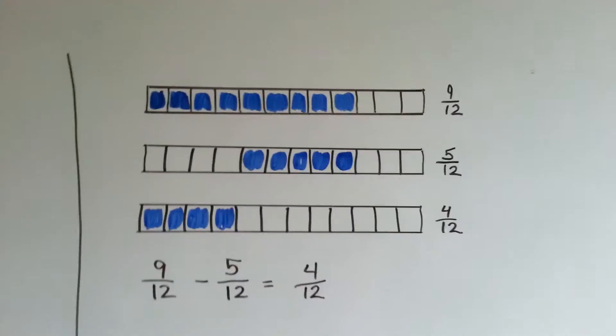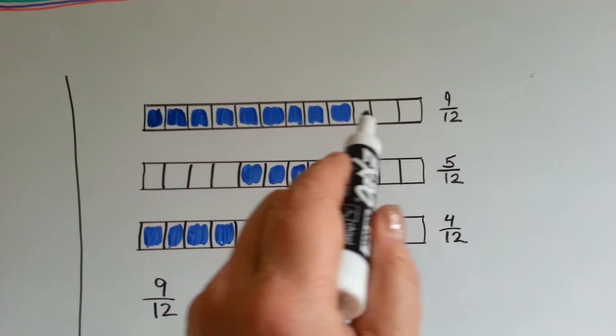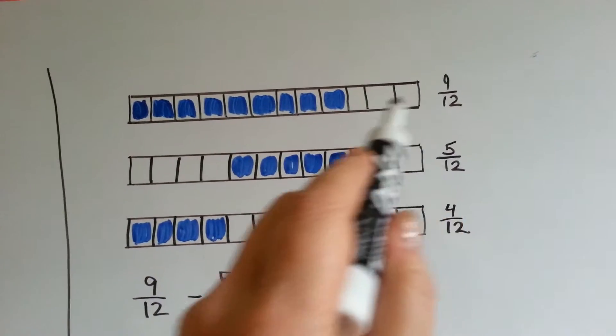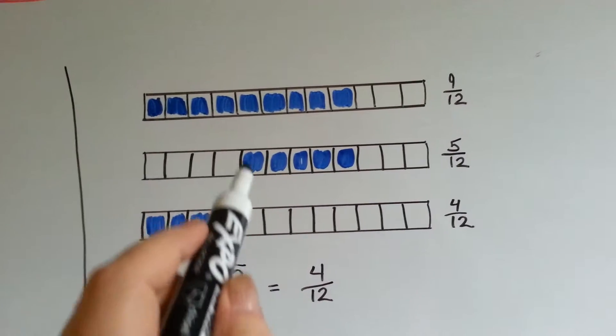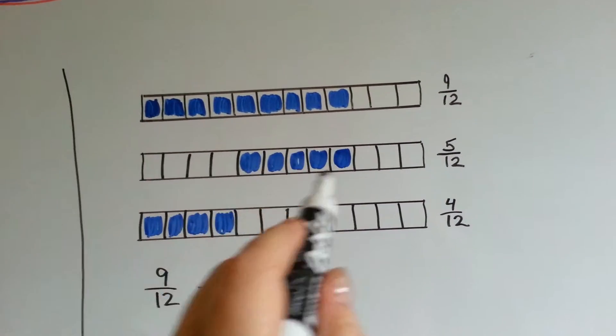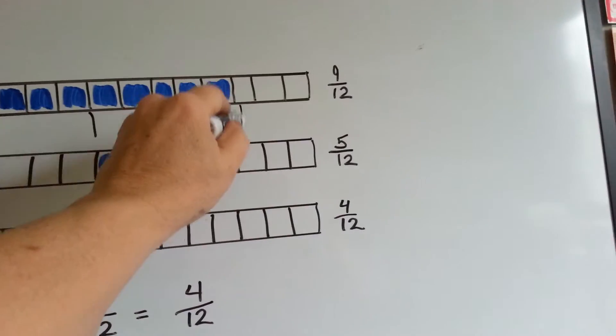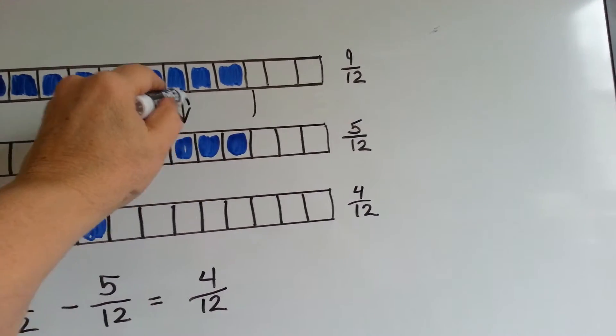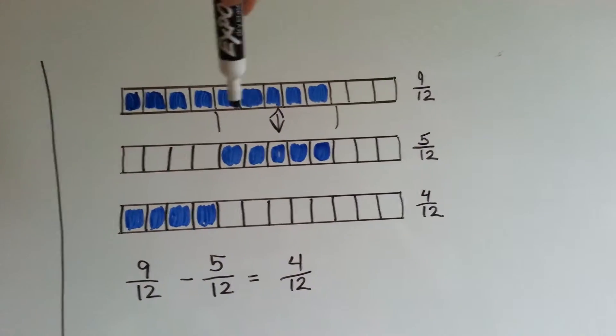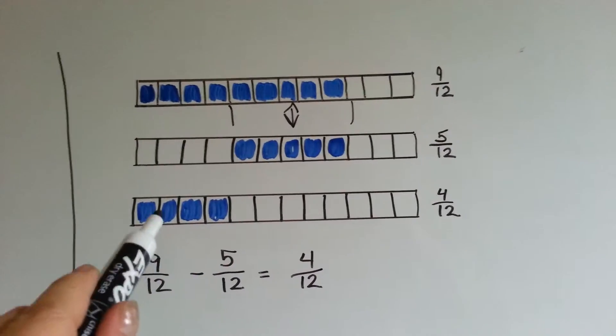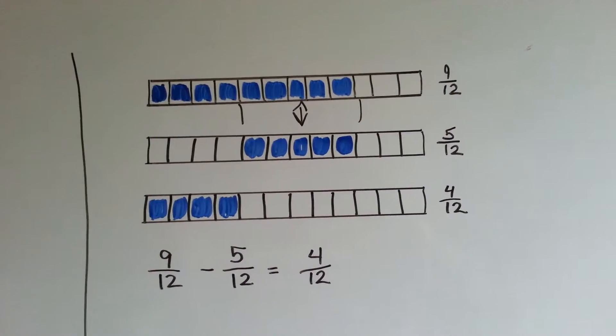Let's look at this one. It's a little bigger. This is split into twelve parts. And nine are blue. Nine twelfths are blue. If we took away this group of five right here. It's this group of five. We're going to take away this chunk right here.